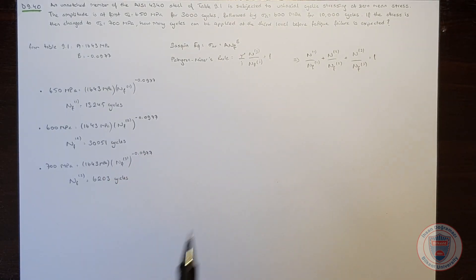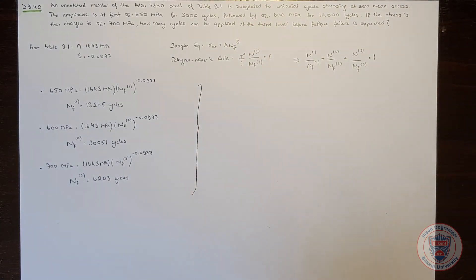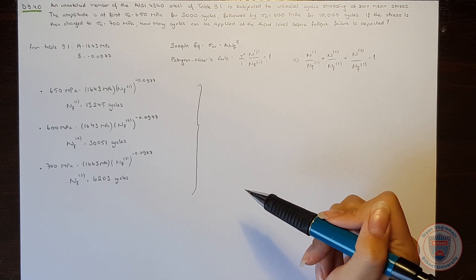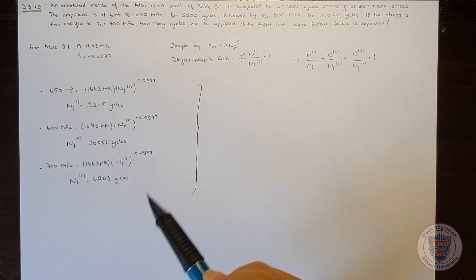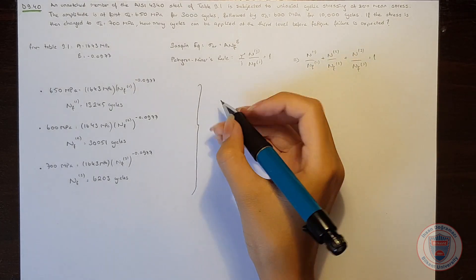So now we can use Miner's rule. We know that at the first level, the member was subjected to a stress for 3000 cycles.